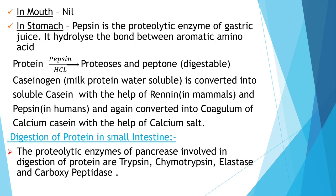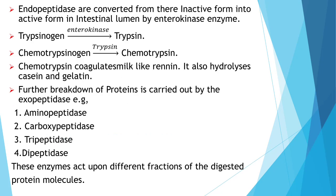Digestion of protein in the small intestine: the proteolytic enzymes of the pancreas involved in protein digestion are trypsin, chymotrypsin, elastase, and carboxypeptidase. Endopeptidases are converted from their inactive form into active form in the intestinal lumen by enterokinase — trypsinogen is converted to trypsin by enterokinase, and chymotrypsinogen is converted to chymotrypsin by trypsin. Chymotrypsin coagulates milk like rennin; it also hydrolyzes casein and gelatin. Further breakdown of protein is carried out by exopeptidases.